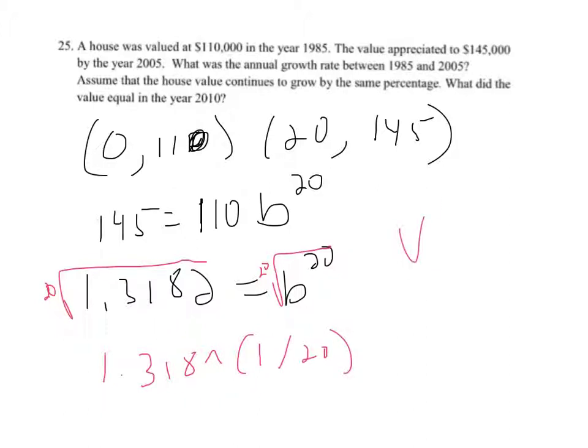Because remember, with radicals, like square root of x is x to the 1 half. The cube root of x is x to the 1 third, and so on and so forth. So I'm going to take that last answer and raise it to the 1 over 20th power. Make sure you use parentheses. And that's getting me 1.0139.